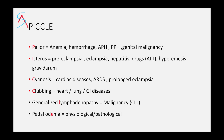Pallor could also be due to any genital malignancy. Then look for icterus — icterus could be because of pre-eclampsia, eclampsia, hepatitis, or any antitubercular drug. Then look for cyanosis — cyanosis could occur in severe cardiac disease, respiratory illnesses, or prolonged eclampsia, because during the seizure the patient may aspirate and cause cyanosis. Look for clubbing, which has many causes — heart diseases, lung diseases, or gastrointestinal diseases. Look for generalized lymphadenopathy, mainly because of malignancy.